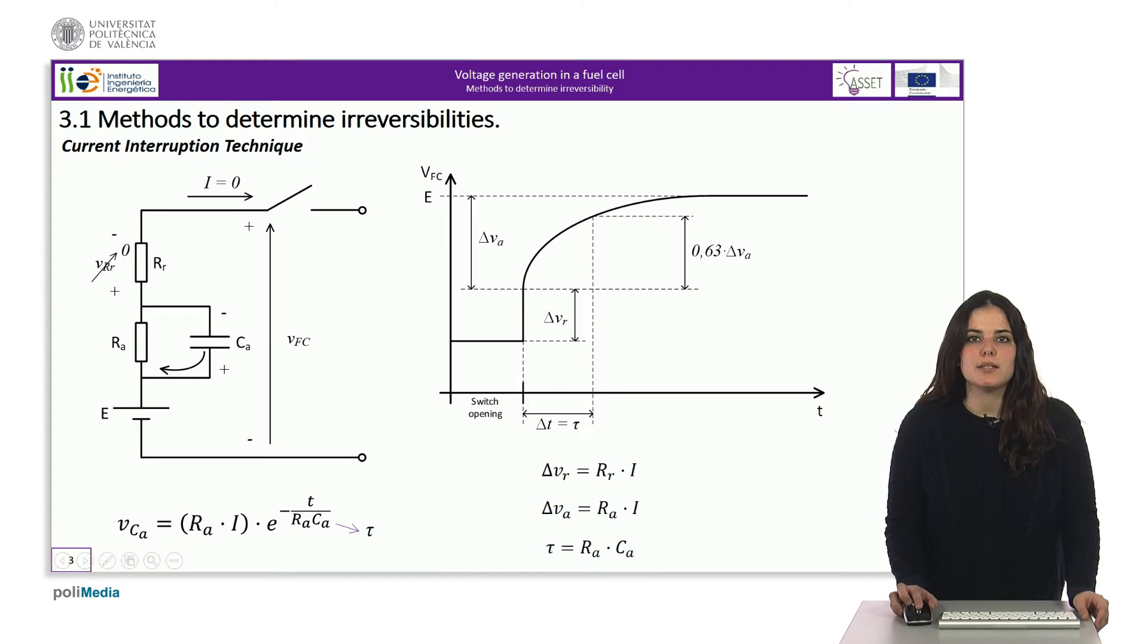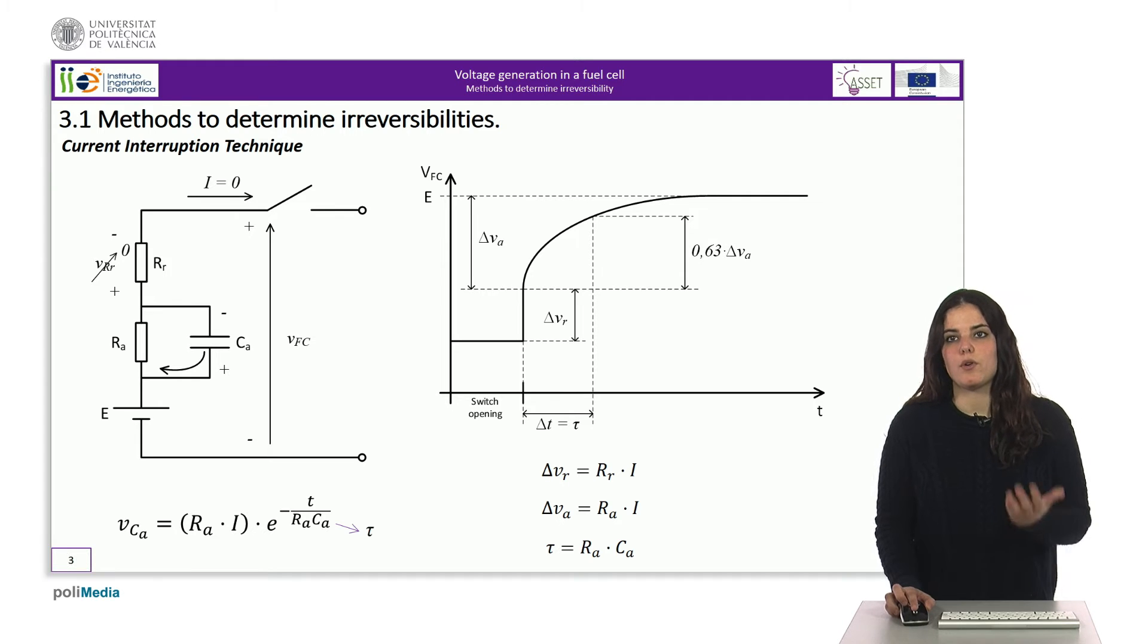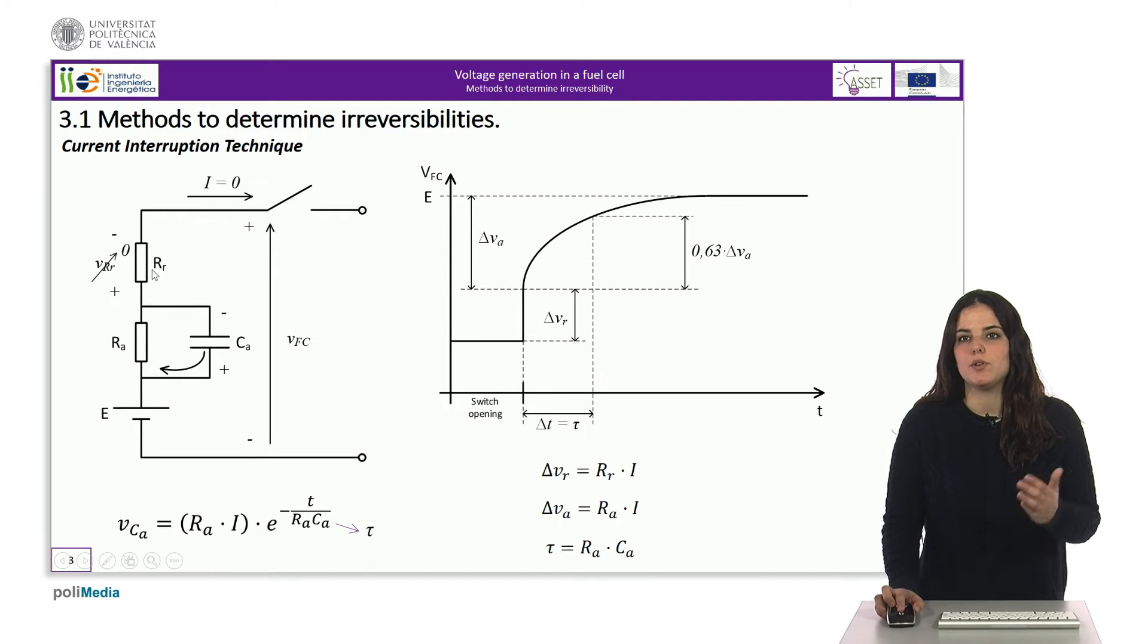When the current is interrupted, the voltage drop that was occurring at the R ohmic resistor disappears instantaneously, since the processes that give rise to this voltage drop are merely charge carriers moving through conductors. Therefore, if the charges disappear, the effect disappears. Thanks to the curve obtained in the oscilloscope, we can know the potential difference delta V R. From this value, we can calculate the value of the resistance R ohmic of the model by simply dividing delta V R by the current that was circulating in the load at the time of the interruption.